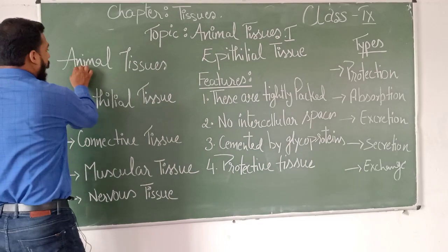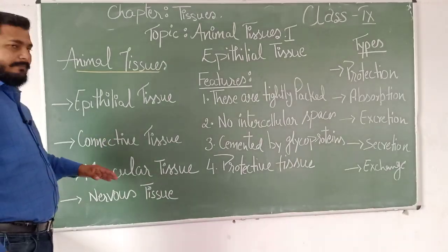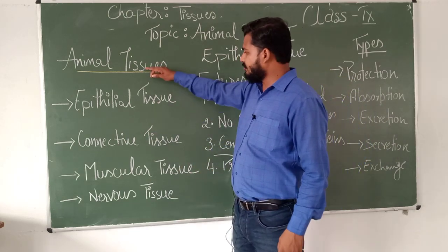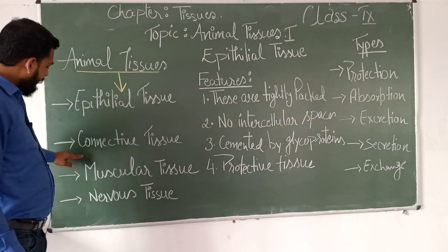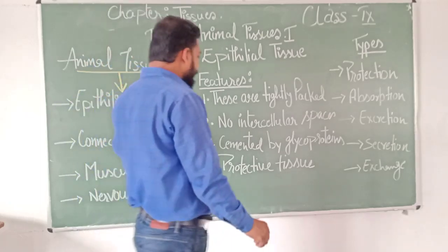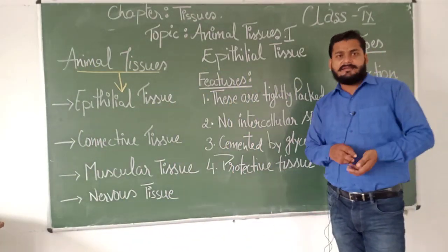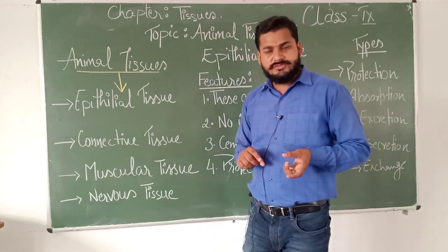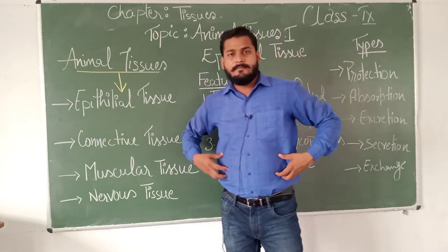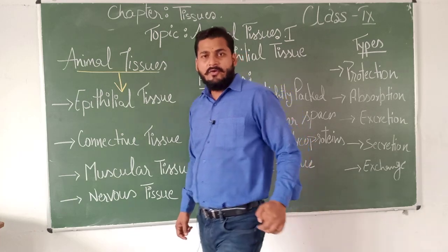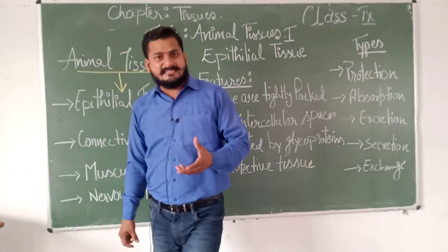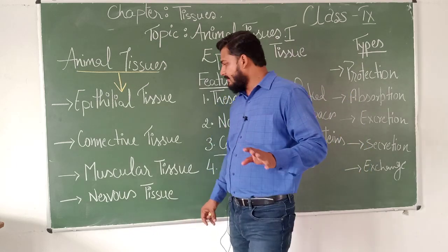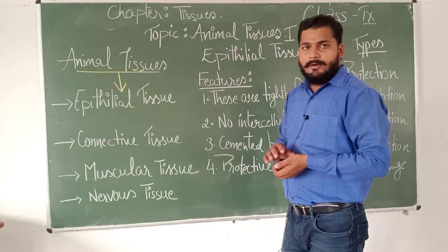Animal tissue can be classified into four types depending upon the functionality of the tissue. The four classifications of animal tissue are: epithelial tissues, connective tissues, muscular tissues, and nervous tissues. Epithelial tissues help to protect the inner lining of organs. Connective tissues connect two or more different tissues. Muscular tissues form our muscles, and nervous tissues conduct signals from the senses to the brain through the spinal cord.